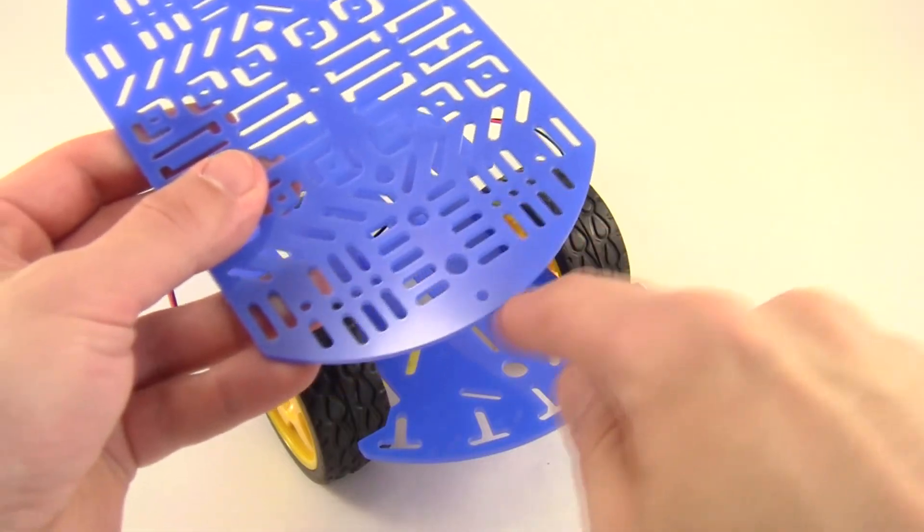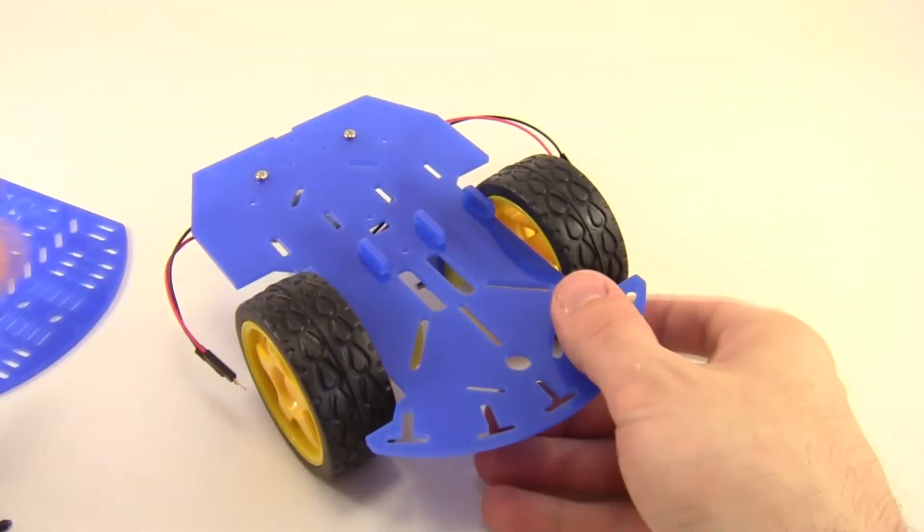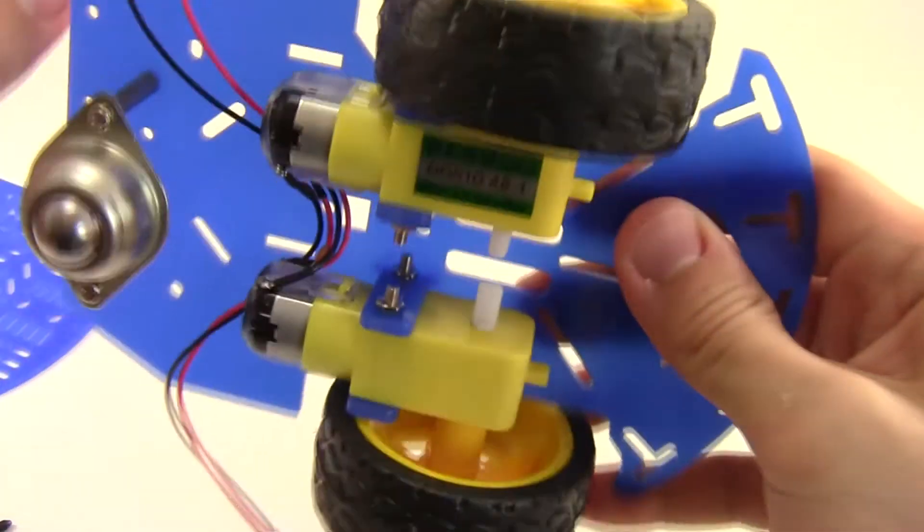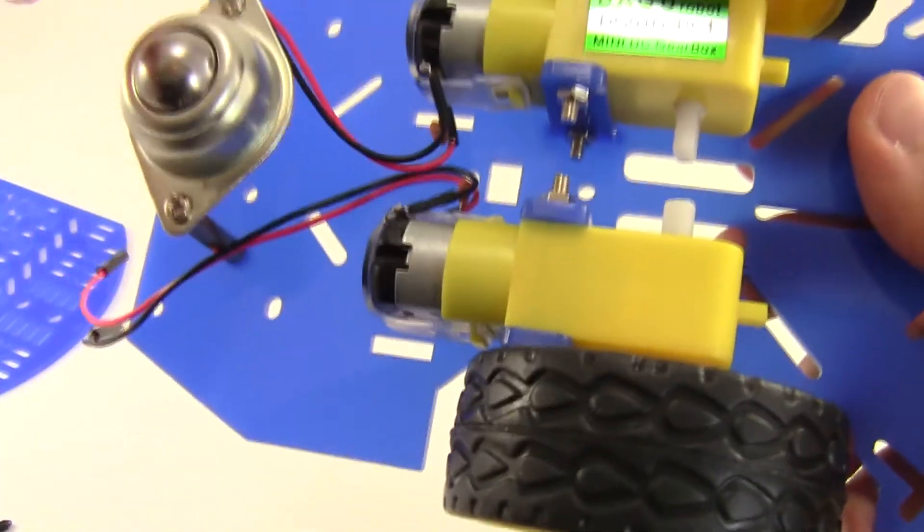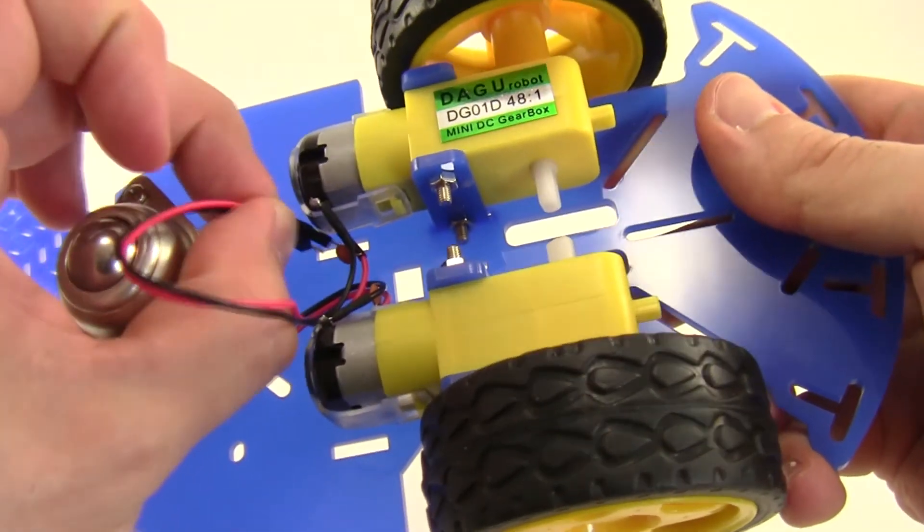Next, you're going to get ready to attach the top plate of the robot, but before you do that, you're going to want to thread the wires from the motors through the bottom plate so they're easier to access later. They won't be long enough to wrap the entire way around the sides, and you don't want them to get tangled in the wheels, so it's easier to just take those leads and poke them through some of the holes.